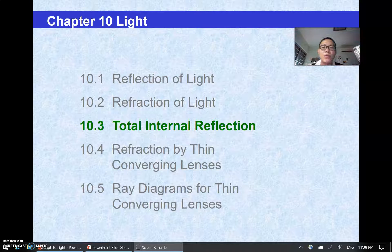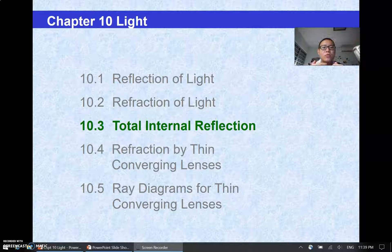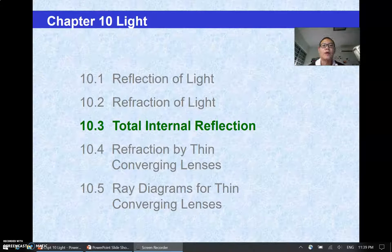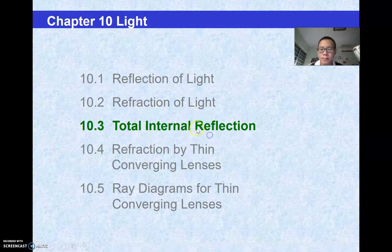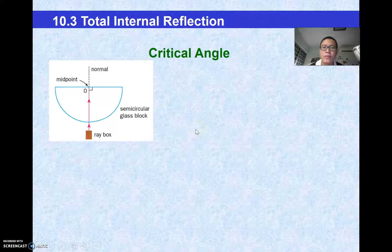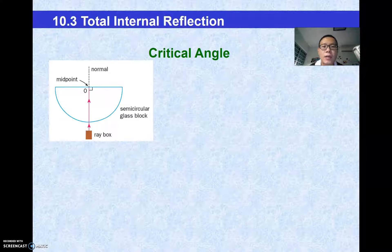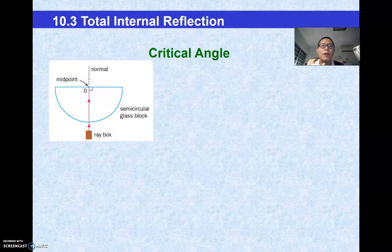Before I go through total internal reflection, I need to bring everyone through the journey of refraction — what actually happens in refraction and what is the final possible outcome. At refraction, there are three possible outcomes: bending away from the normal, bending towards the normal, and a third case whereby you have zero change in direction.